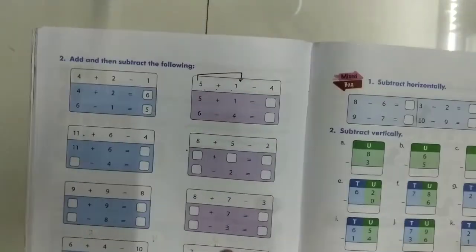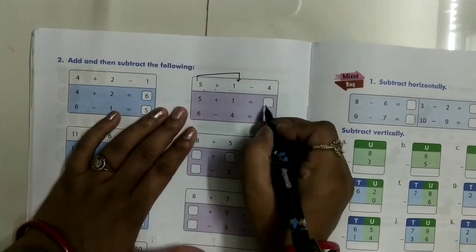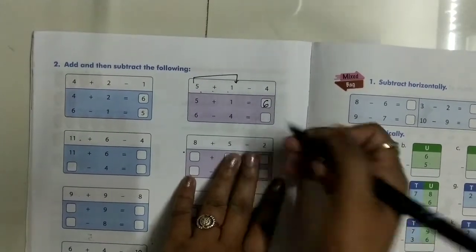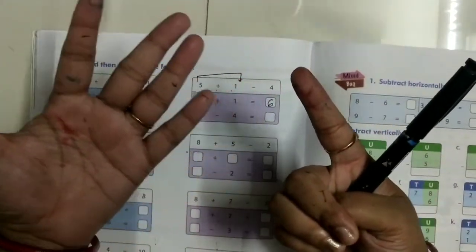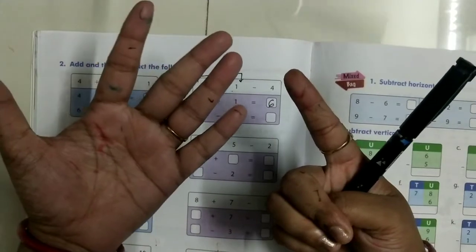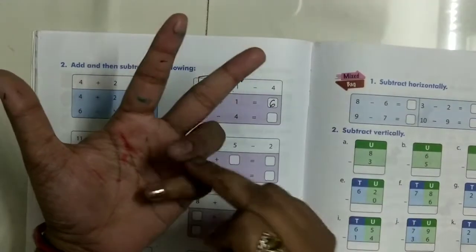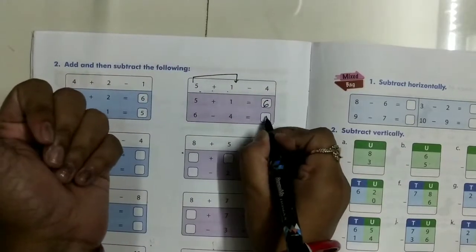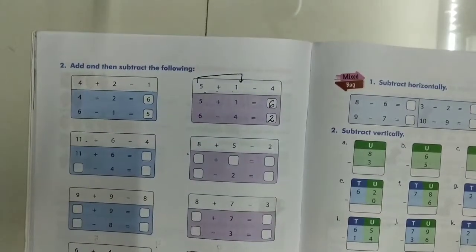In your textbook, when you add 5 plus 1, it will be 6. And when from 6 you take away 4 fingers: 1, 2, 3, 4 — how many fingers are remaining? 2. So 6 minus 4 equals 2.